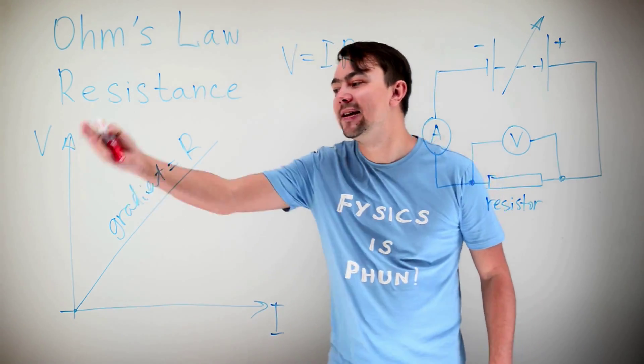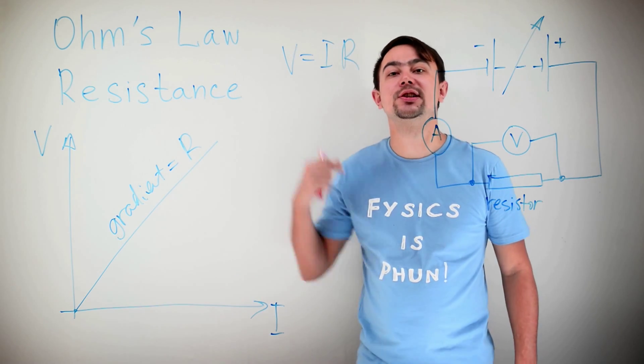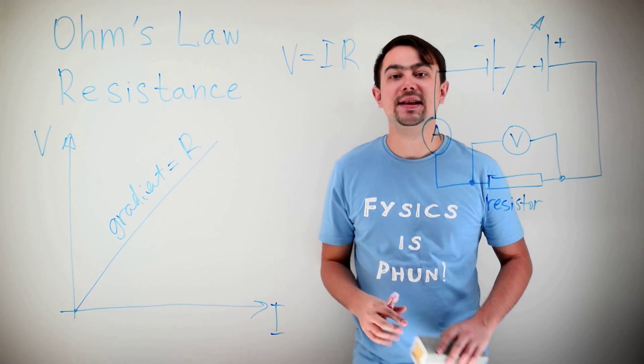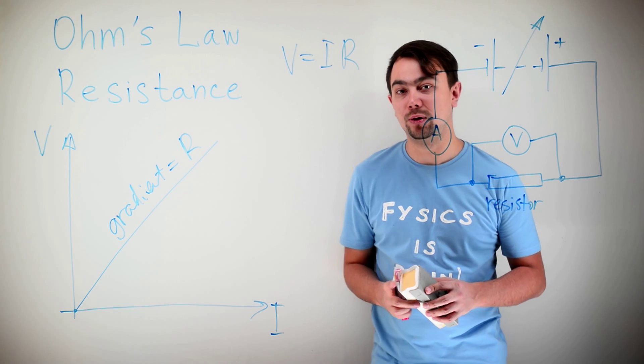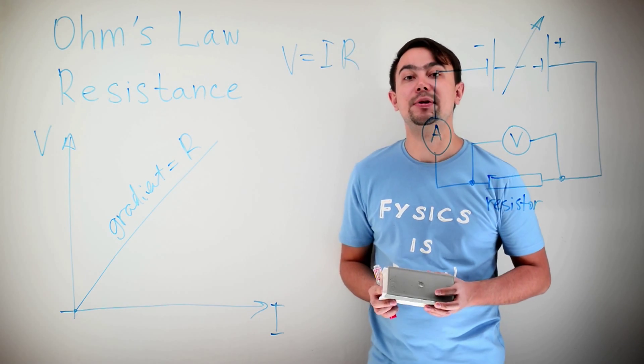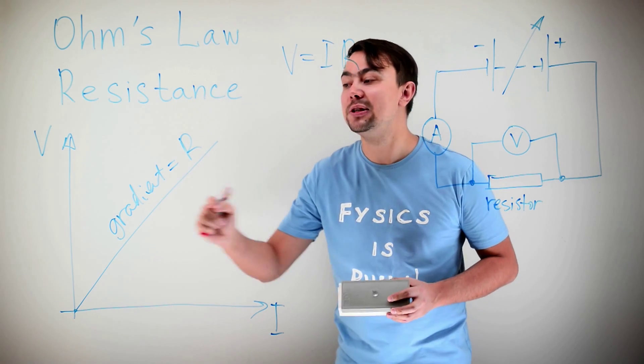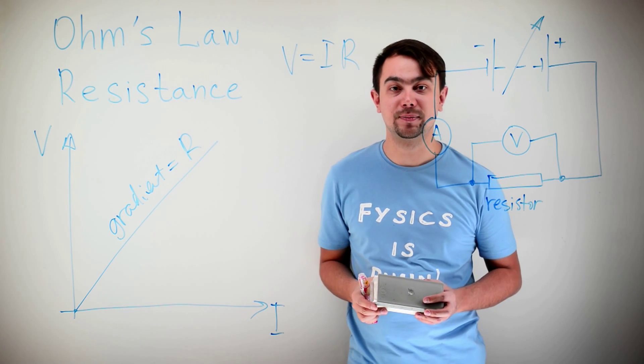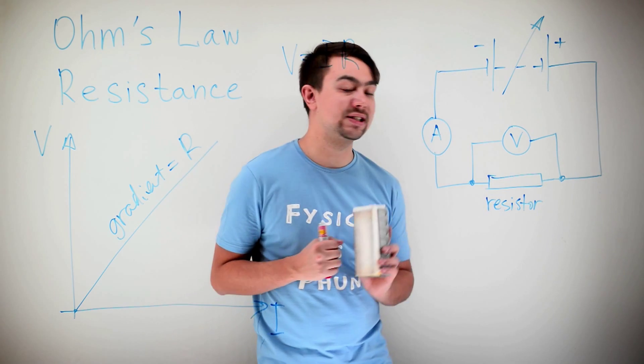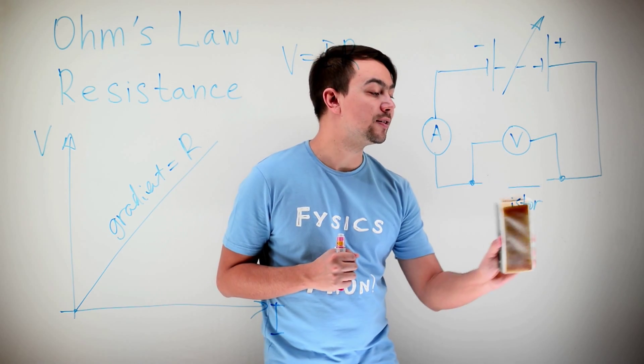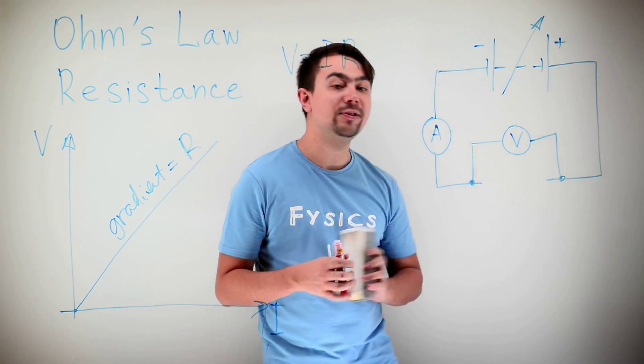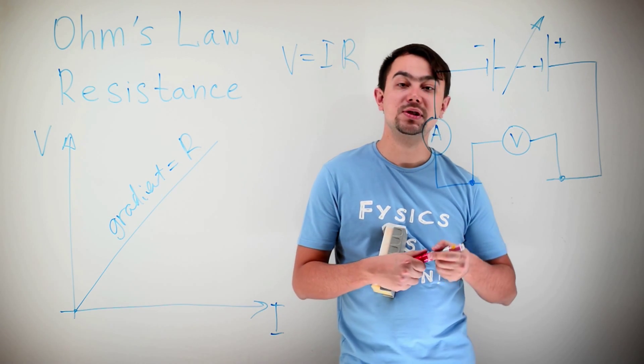When a conductor behaves like this, we call it an ohmic conductor. That is because it obeys Ohm's law. That is because the gradient is constant. And that means that the resistance is constant. This is true for most resistors. But if we replace the resistor with a simple filament lamp, we would see a different picture.